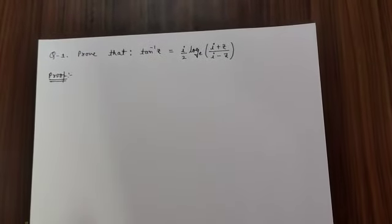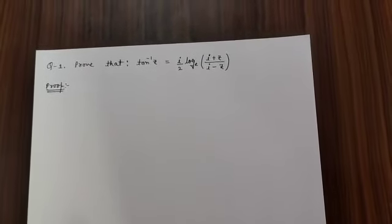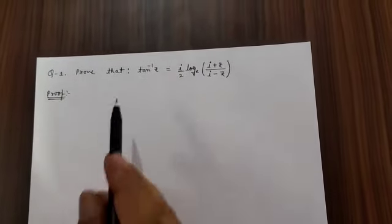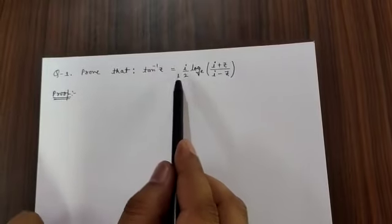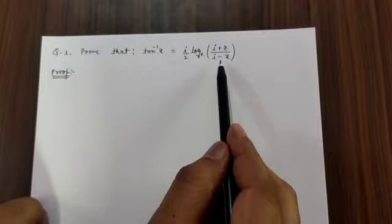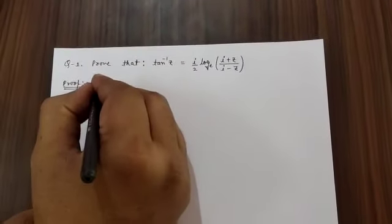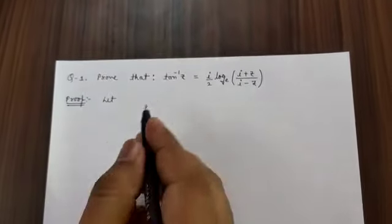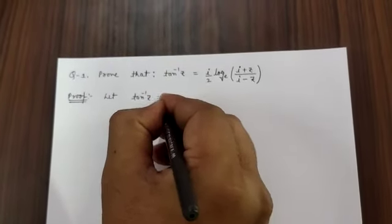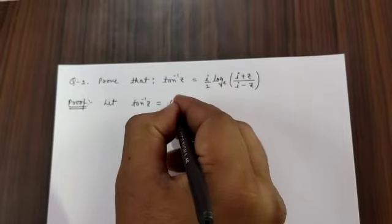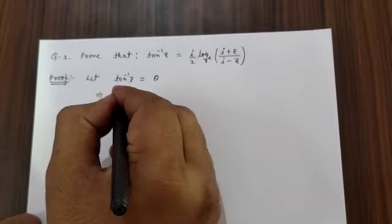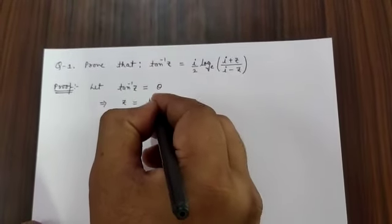Good morning students. Today we are taking some problems based on circular and hyperbolic functions. Question number one: prove that tan⁻¹(z) = (i/2) * log_e((i+z)/(i-z)). For the first step, let tan⁻¹(z) = θ, so z = tan θ.